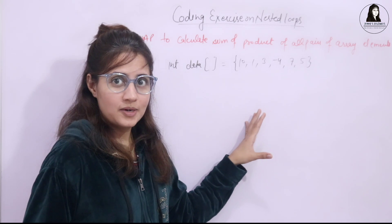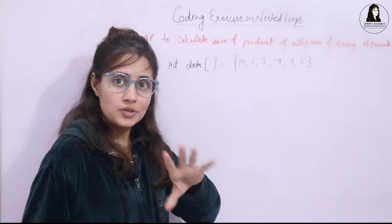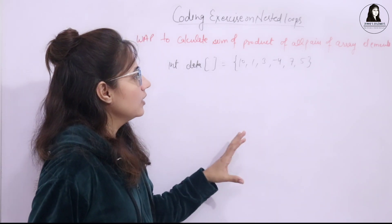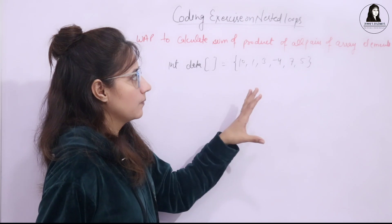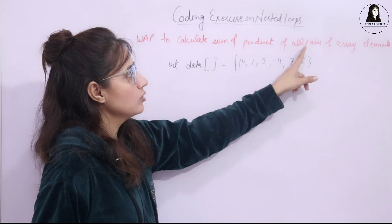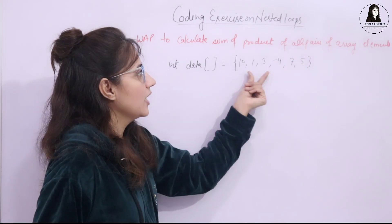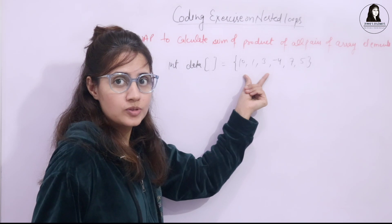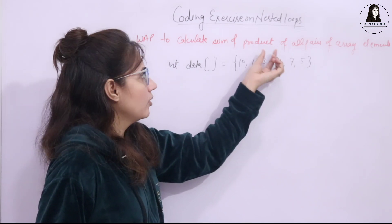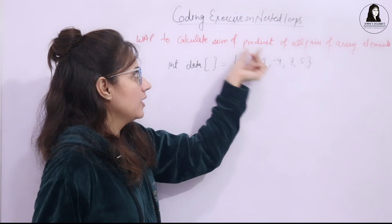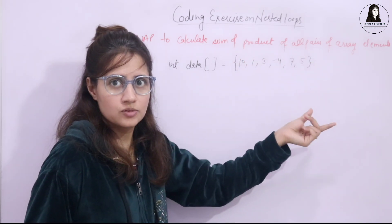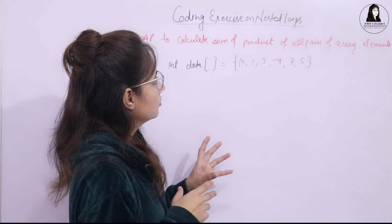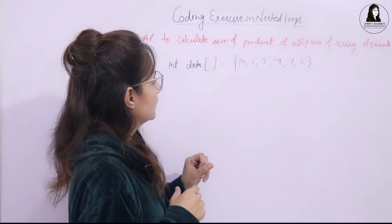Now if you got this problem statement, you can pause the video and try this out. But if not, it's okay — let me explain a little bit further. The main problem here is how to find out the pairs of array elements. For that you will need two loops. Then you have to do the product of each pair, and then compute the sum of all those products.